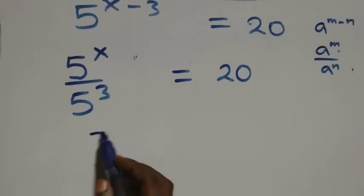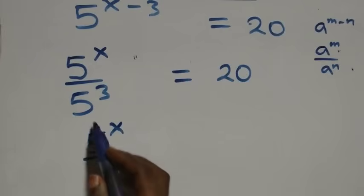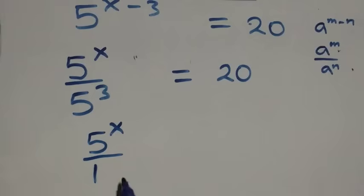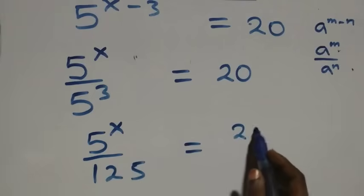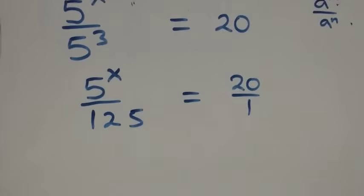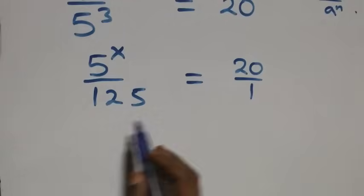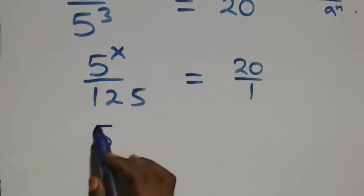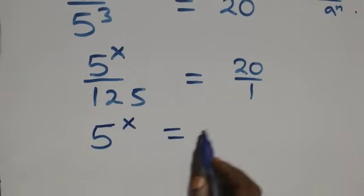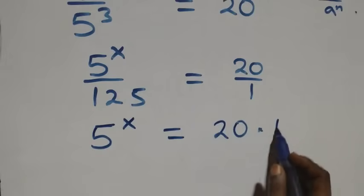This becomes five raised to power x over one hundred and twenty-five, equals to twenty. We cross multiply here, and five raised to power x times one is the same thing as five raised to power x, equals to twenty times one hundred and twenty-five.